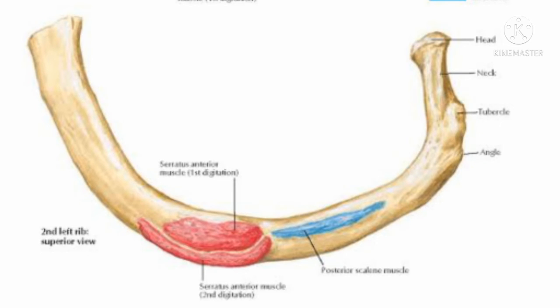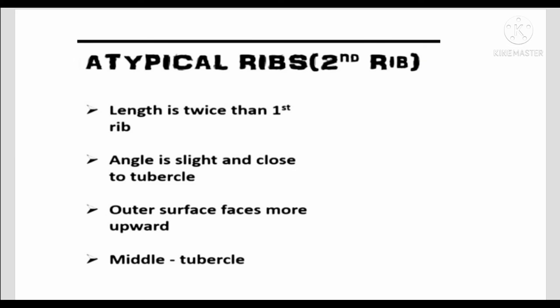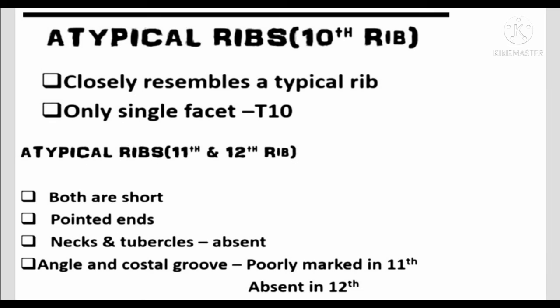Second atypical rib: its length is twice that of the first rib. The angle is slight and close to the tubercle. The outer surface faces more upward. A roughened tubercle is present in the middle of the rib. The tenth atypical rib closely resembles a typical rib but has only a single facet for the tenth vertebra.